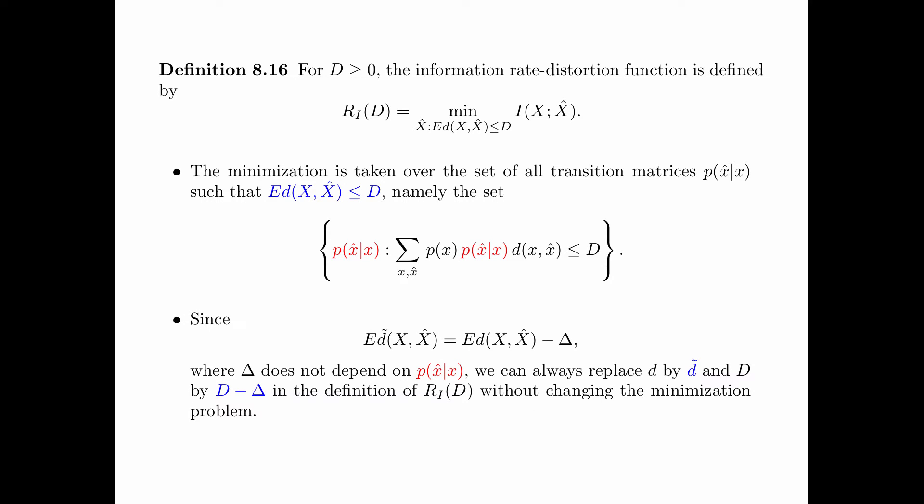Since the expectation of d-tilde(x, x-hat) equals the expectation of d(x, x-hat) minus delta, where d-tilde is the normalization of d and delta does not depend on p(x-hat | x), we can always replace the distortion measure d by d-tilde and the distortion d by d minus delta in the definition of R_I(d) without changing the minimization problem. This is illustrated in definition 8.16. Therefore, without loss of generality, we can assume that d is normal for the purpose of defining the information rate distortion function.